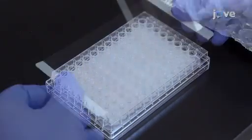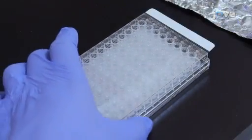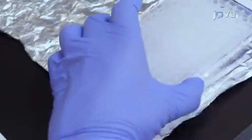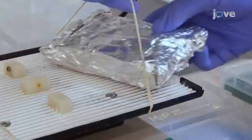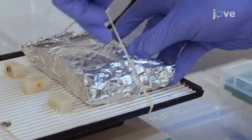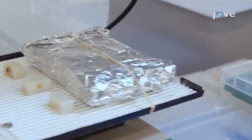Seal the plate with a plate sealer. Once sealed, wrap the entire plate, including the inverted plate cover, with aluminum foil. Place the plate on a plate shaker, secure it, and shake at approximately 500 RPM for two hours at room temperature.